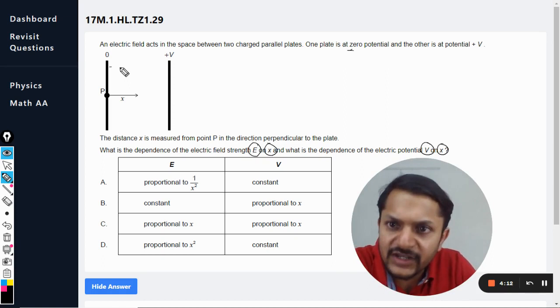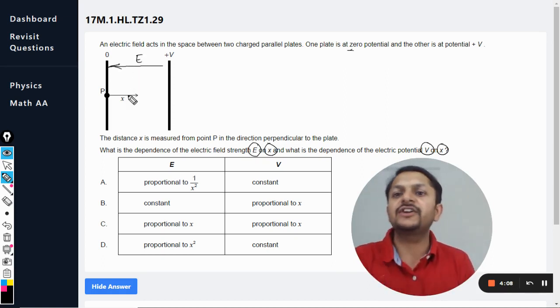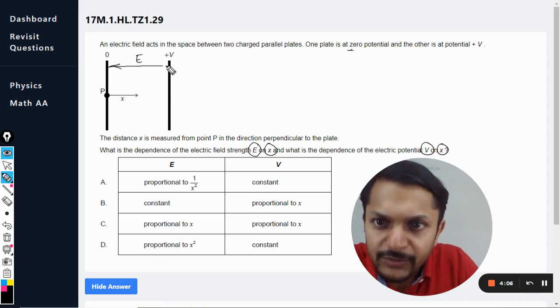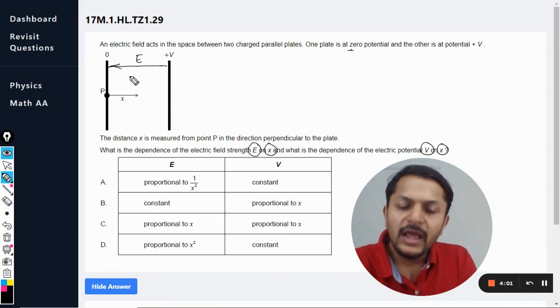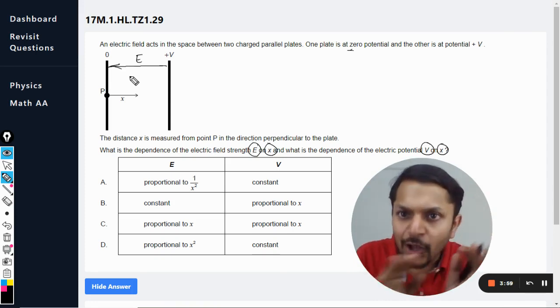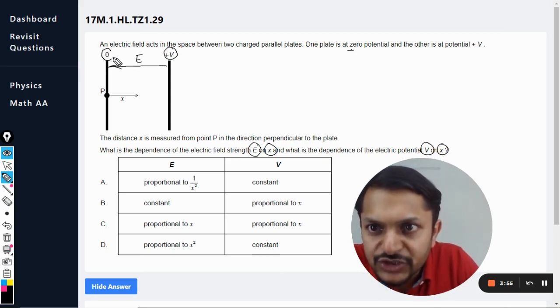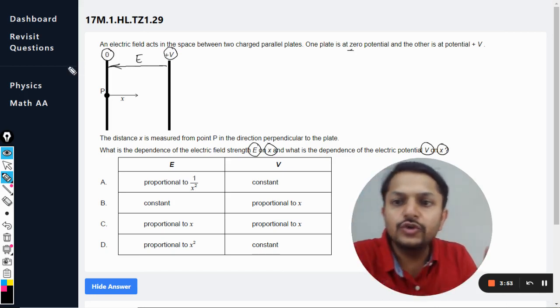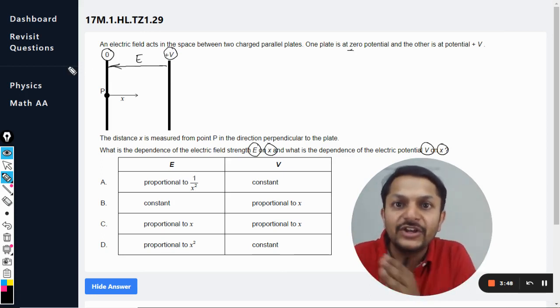So the first thing we can learn from this question is that the electric field is always directed from the positive plate to the negative plate. This is how the electric field looks like. And when we are moving along the electric field, you see the potential is reducing from V to zero. So if you are moving towards the left-hand side from the positive plate, the potential keeps on reducing.